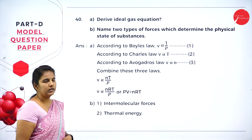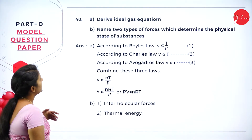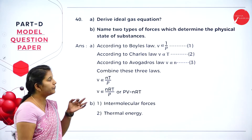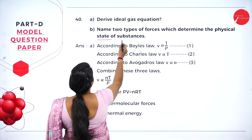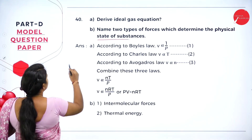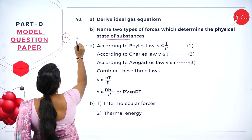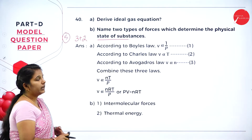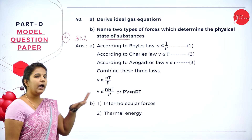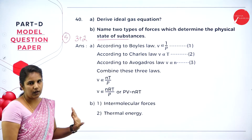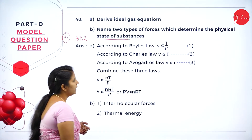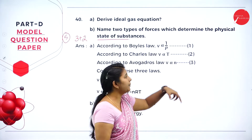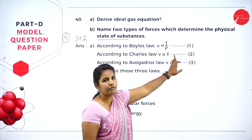Next question: Derive the ideal gas equation and name the two types of forces that determine the physical state of a substance. This carries five marks — first question 3 marks, second 2 marks. To derive the ideal gas equation, we need Boyle's law, Charles' law, and Avogadro's law. According to Boyle's law, if temperature is kept constant, the volume of the gas is inversely proportional to the pressure.